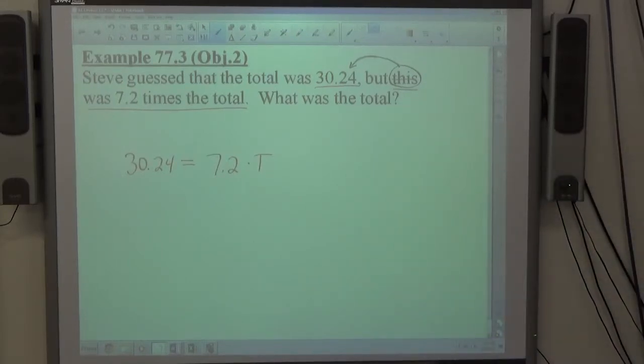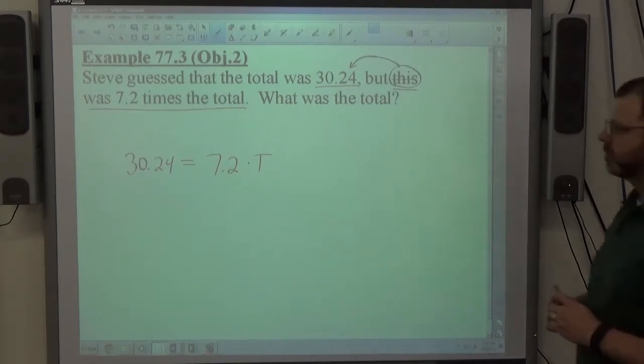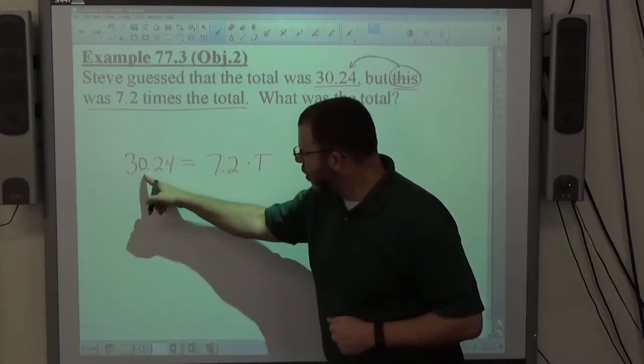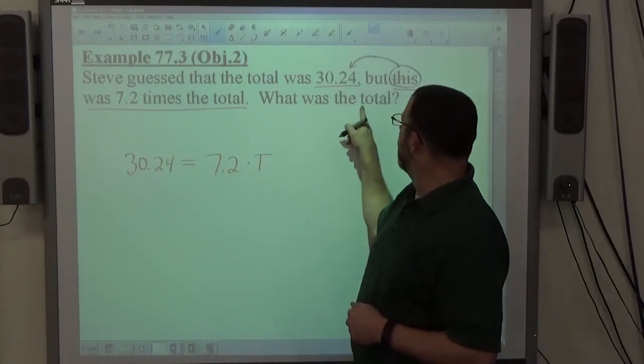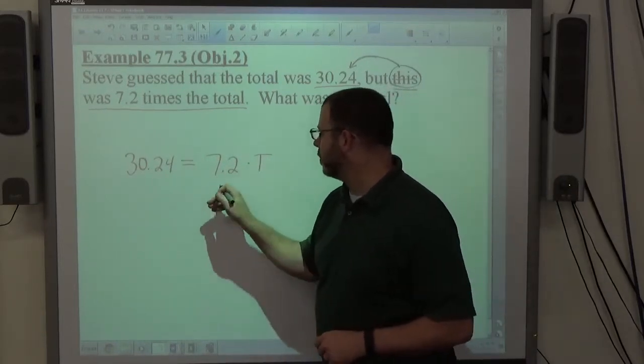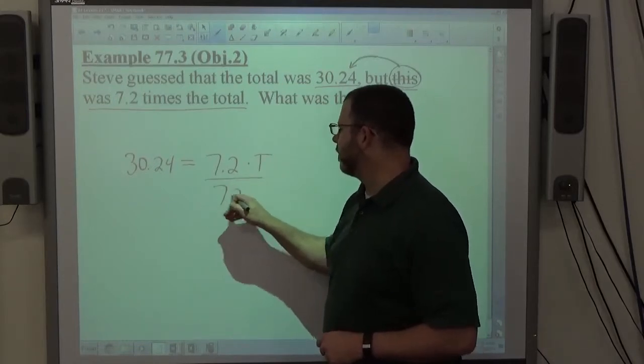The total being what we don't know, but everything else is a known value, and that's just a basic equation phrase there. So, 30.24 equals 7.2 times the total. What was the total? What is t equal? All we've got to do is divide by 7.2.